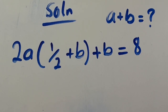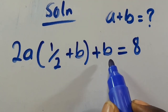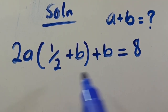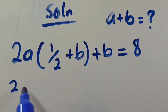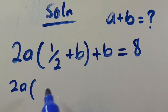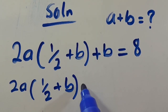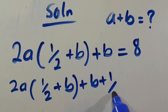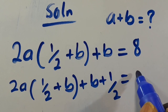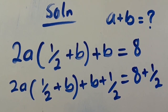From here, we want to make sure that what we have inside the bracket is equivalent on both sides so we can factor. Let's add 1 over 2 to both sides, so we have 2a times (1 over 2 plus b) plus b plus 1 over 2 equals 8 plus 1 over 2.